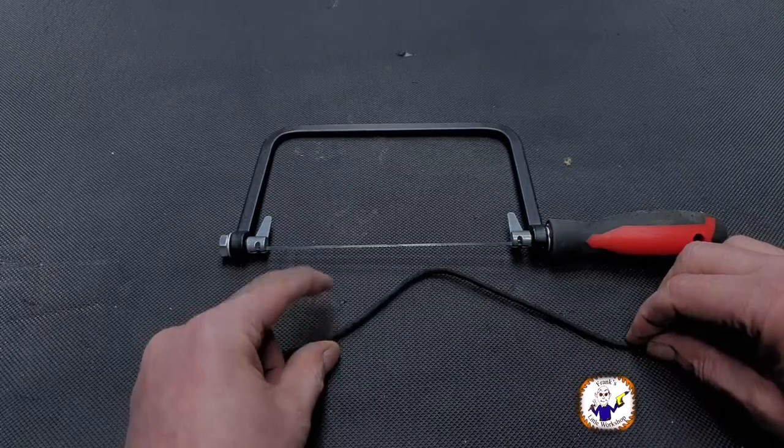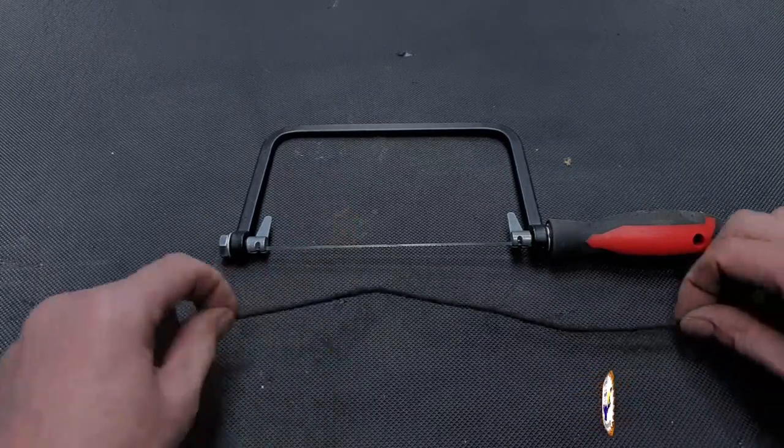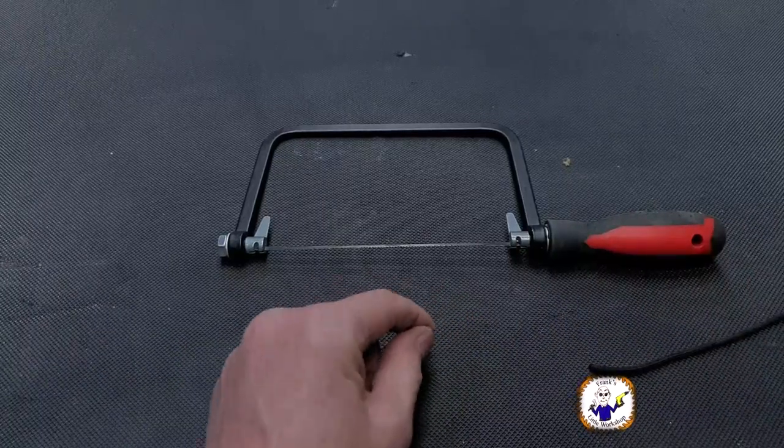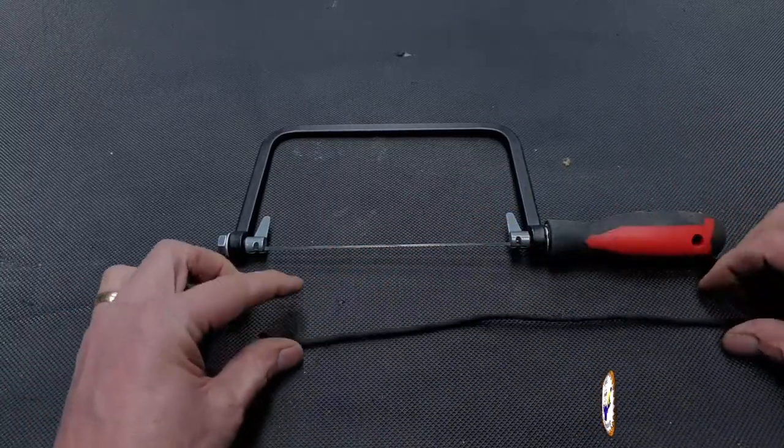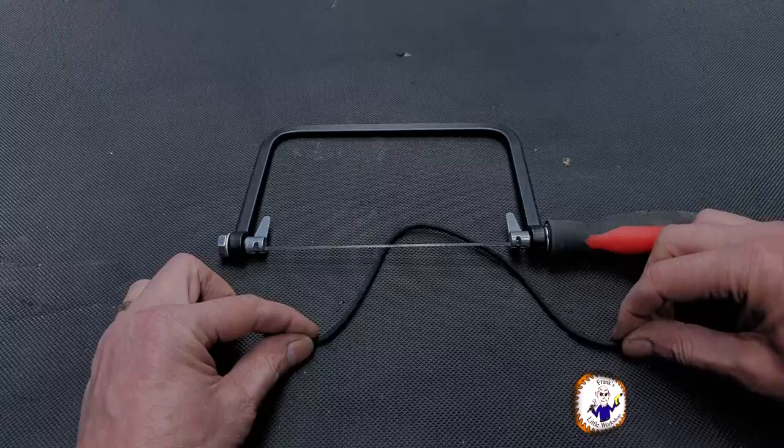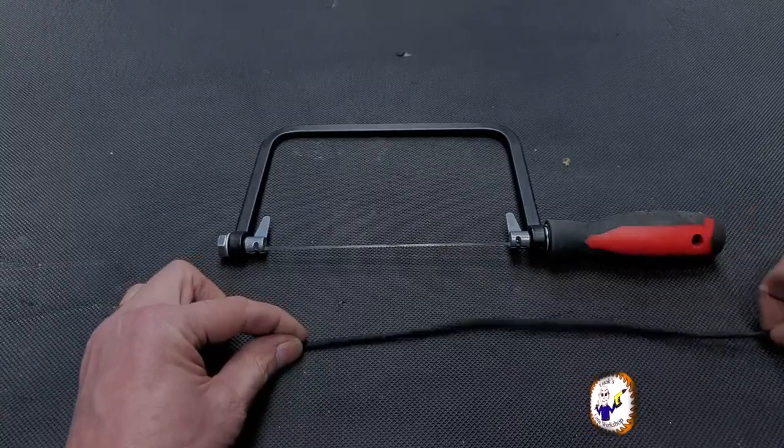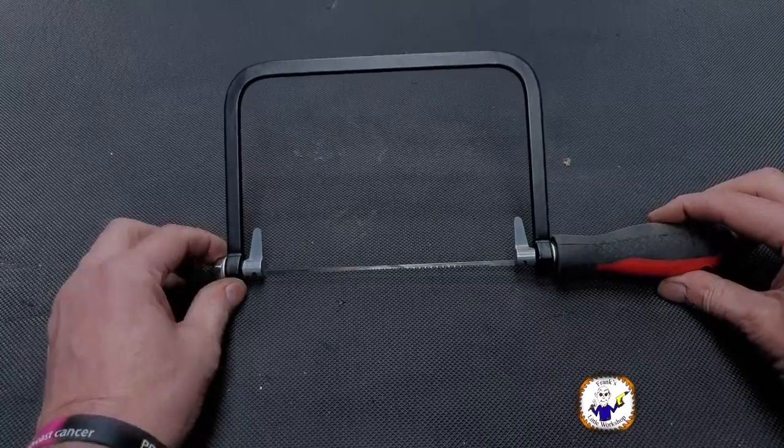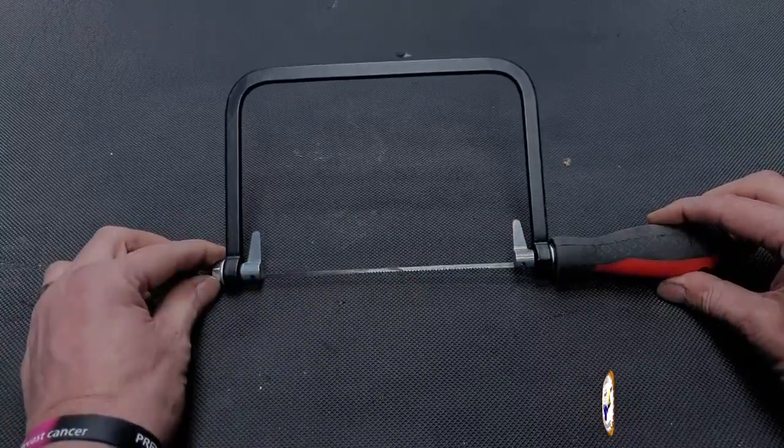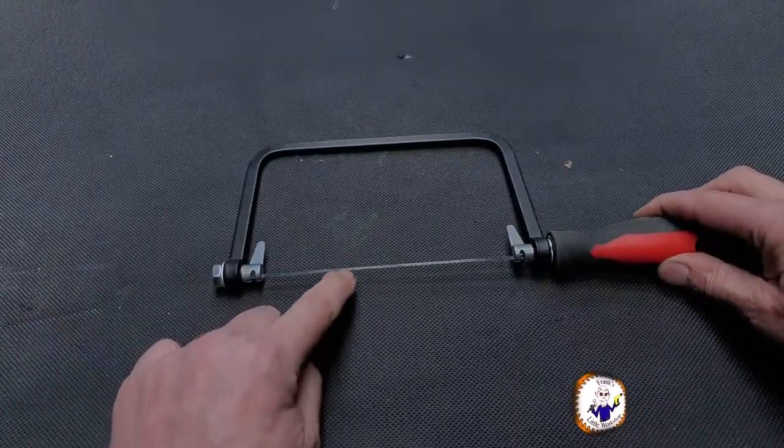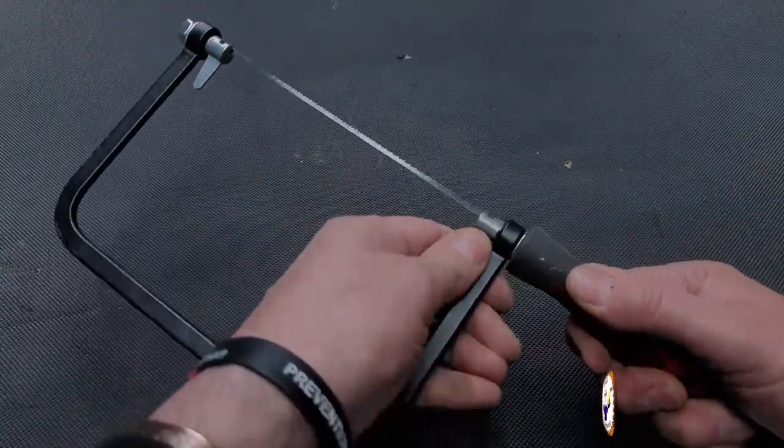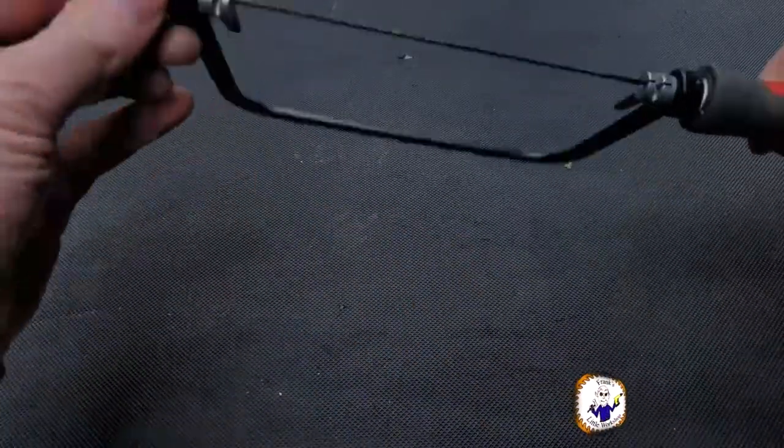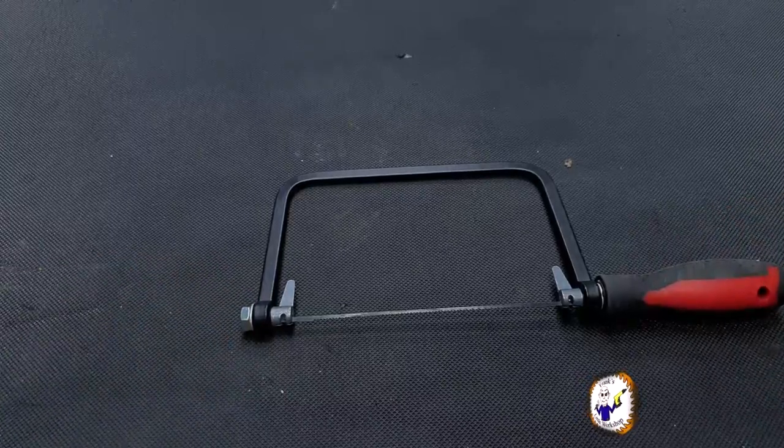That's the most common cause of snapping a coping saw blade. So having it set as a pull saw, you can pull it and it stays under tension. Having it set as a push saw, you've got more chance of bending the blade. I hope that explains it quite well. So I've got it set up as a pull saw. The tension is now right, it's all tightened up, and this is all tight. That is ready to go.